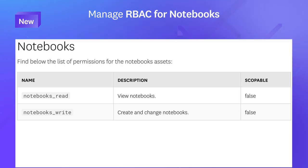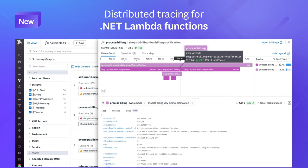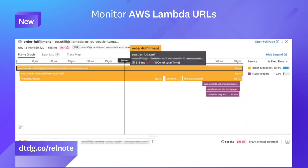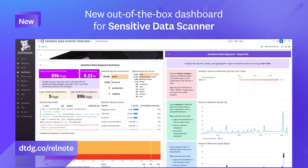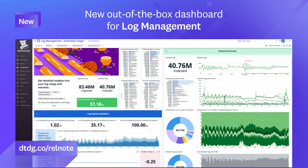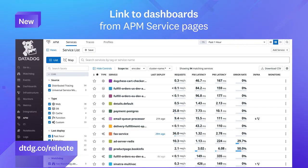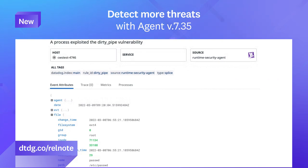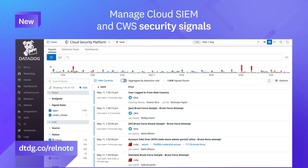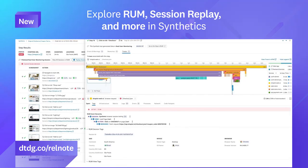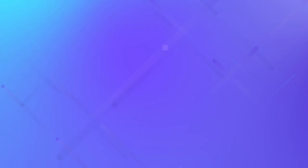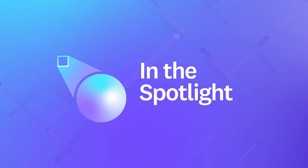That was just a sneak peek of the many features we released this month. For a full list, visit the link shown. This month in the spotlight, we have automated root cause analysis with Watchdog RCA.